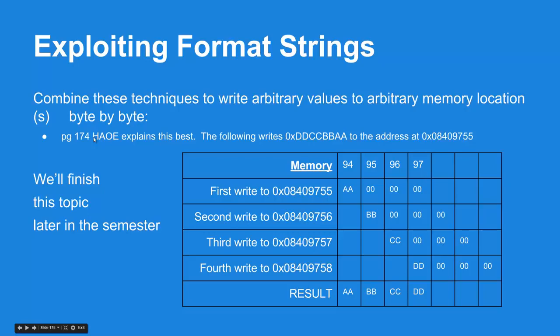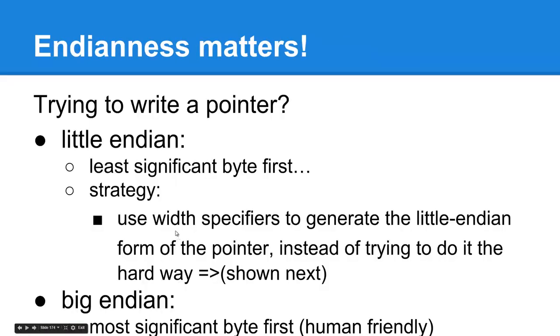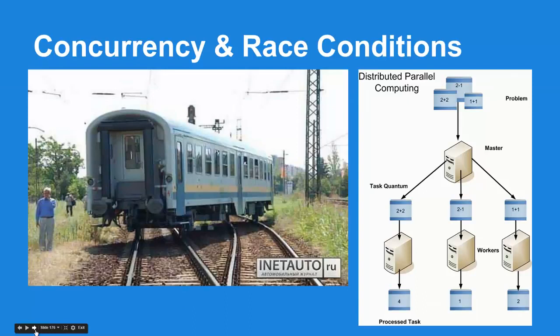On page 174 of the Art of Exploitation textbook, it demonstrates a technique that uses four memory overwrites to write a byte each time striping over 32 bits or four bytes in a target destination. This is the hard way to do it. The easier way is to simply calculate how it should look in little endian format and use the width specifiers to generate that number, and then print it to the destination by %n in a single write. That wraps it up for format strings and brings us to concurrency and race condition vulnerabilities, which summarized very well by this unfortunate train problem and is common in distributed parallel computing.